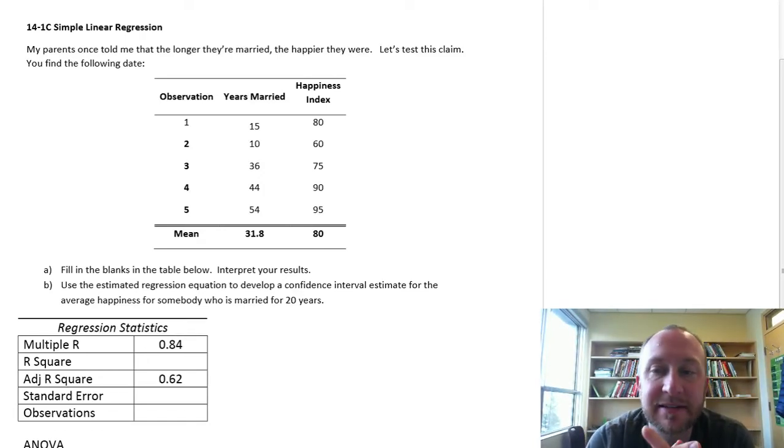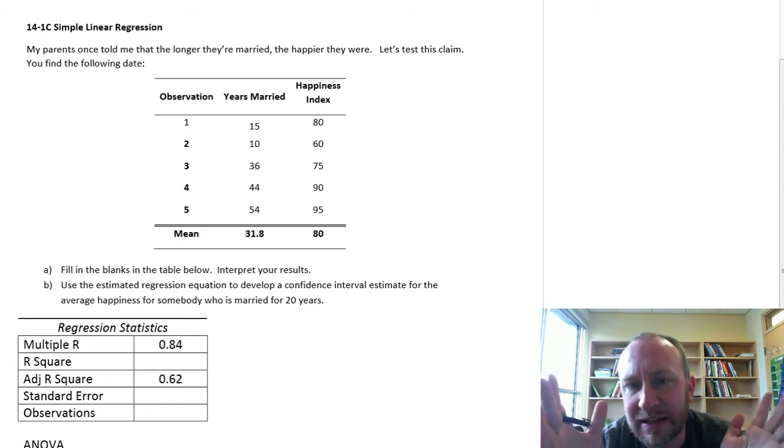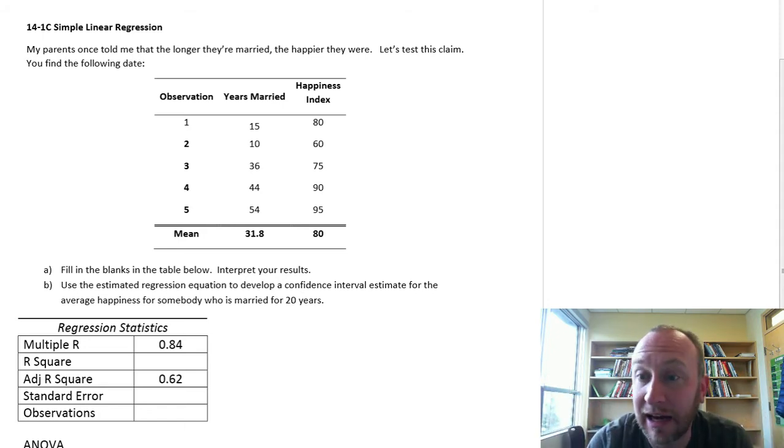Hello and welcome to this next exercise, another simple linear regression. This time we're looking at a claim that the longer you're married, the happier you are. So we have data on the years married and a happiness index.